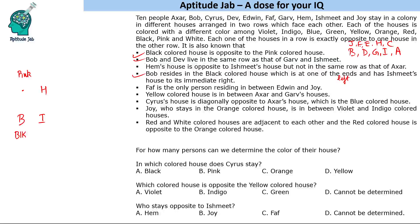So we know that J, F, E, H, and C are in the second row. We now know the names of people in both rows. Then we are given that the yellow coloured house is in between Akser and Gaurav's houses. We know Akser and Gaurav are in this row and the yellow coloured house is between them, so Akser and Gaurav are on the sides — this will be D's house, which is yellow.